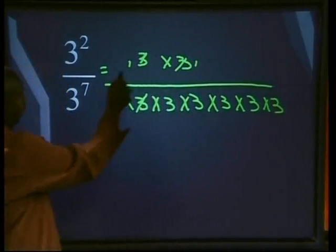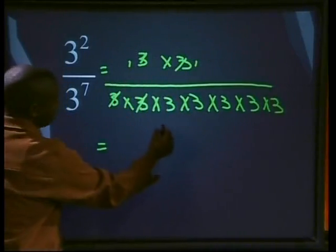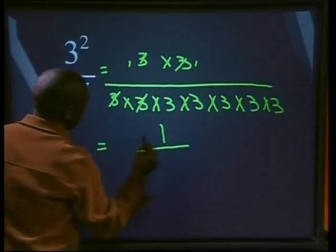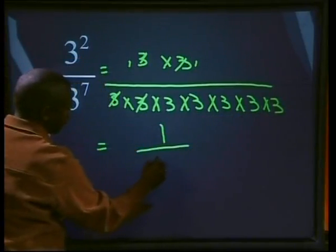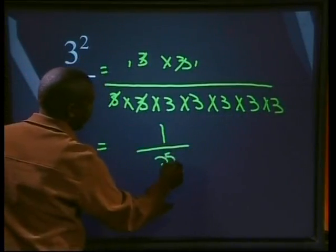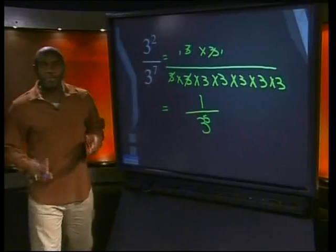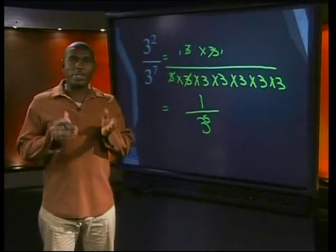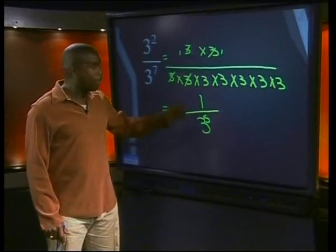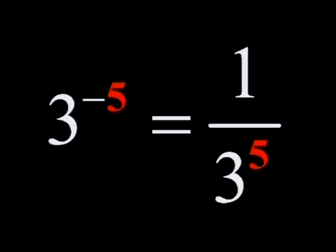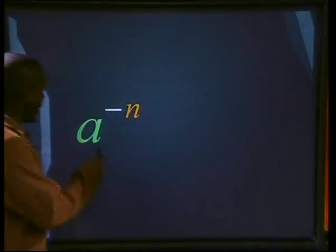So what we have is one times one, which gives us one, over how many threes do we have at the bottom? One, two, three, four, five — therefore it will be three to the power of five. The first answer we got was three to the negative five; the second answer we got was one divided by three to the power five. Both must be correct, so we can say that they are equal.